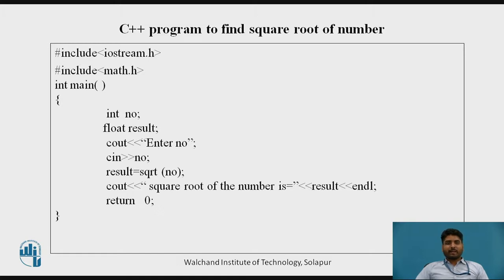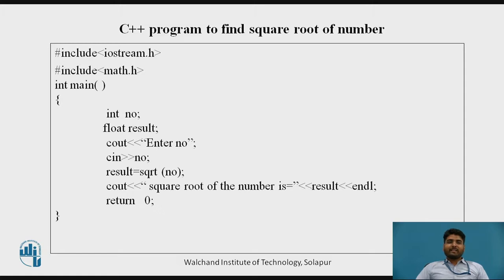In this program, we are finding the square root of any number. The function required is SQRT — it is a function to find the square root of any number. The main program starts with int main, then followed by int number and float result. Two data types are used — integer and float — and two variables are used: number and result. Cout with the insertion operator displays 'enter a number' on the screen, and the number entered by the user is stored in the variable number using Cin with the extraction operator.